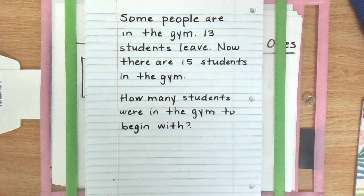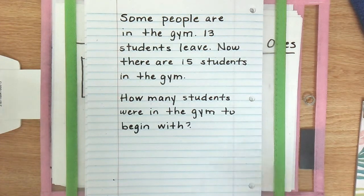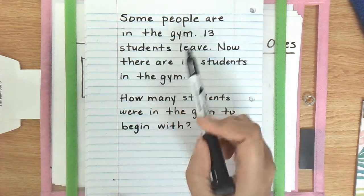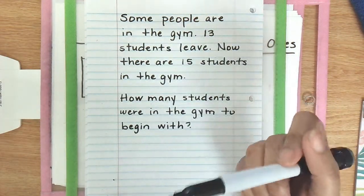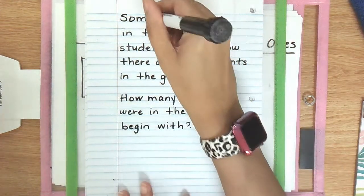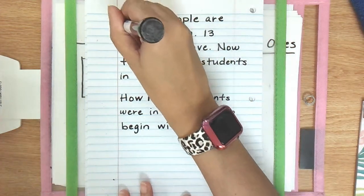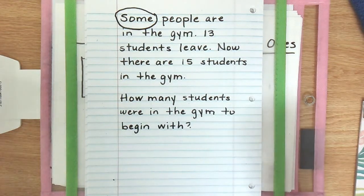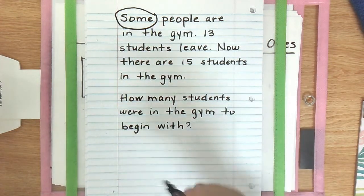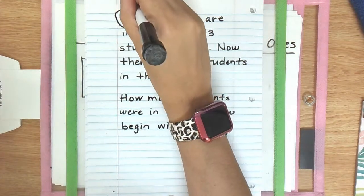We've already read it our first time now we're going to go through sentence by sentence one at a time and pull out any important information we need. The first sentence says some people are in the gym. Now there aren't any numbers in this sentence but there is an important key word in here. This word some is very important because it is our unknown. We do not know how many some people are. So in class I would have students circle that word some and put a question mark above it.